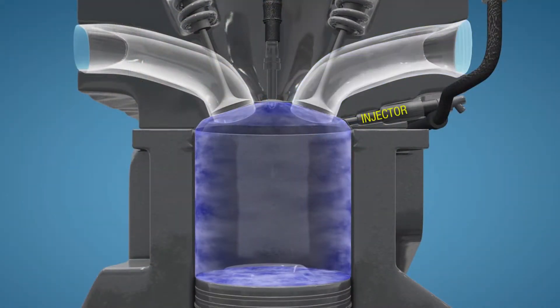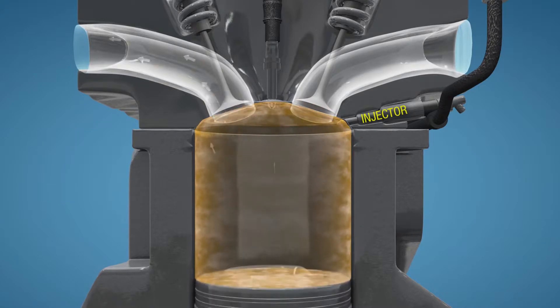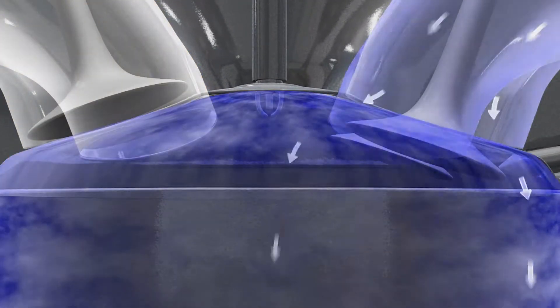To put it simply, GDI injector deposits lead to less efficient operation of the engine by obstructing the spray of fuel into the combustion chamber. This is especially true for vehicles with higher accumulated mileage and can manifest as a decrease in fuel economy and an increase in harmful tailpipe emissions.